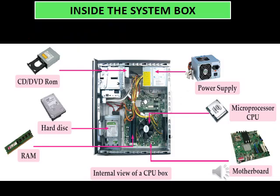Inside the system box. This is an image showing us the internal view of a CPU box. The CPU box contains a CD/DVD ROM, hard disk, RAM, power supply, microprocessor CPU and a motherboard.